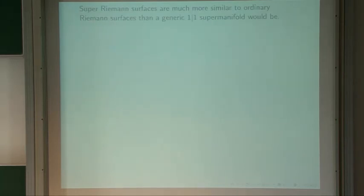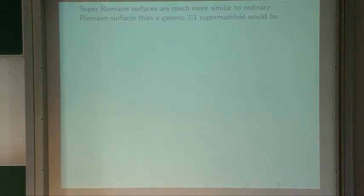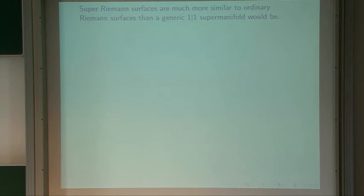Why do we use super-Riemann surfaces instead of ordinary 1|1 supermanifolds? The real reason is that you can do superstring theory on super-Riemann surfaces but not on generic 1|1 supermanifolds. Super-Riemann surfaces are much more similar to ordinary Riemann surfaces than a generic 1|1 supermanifold would be. Let me give an elementary example.